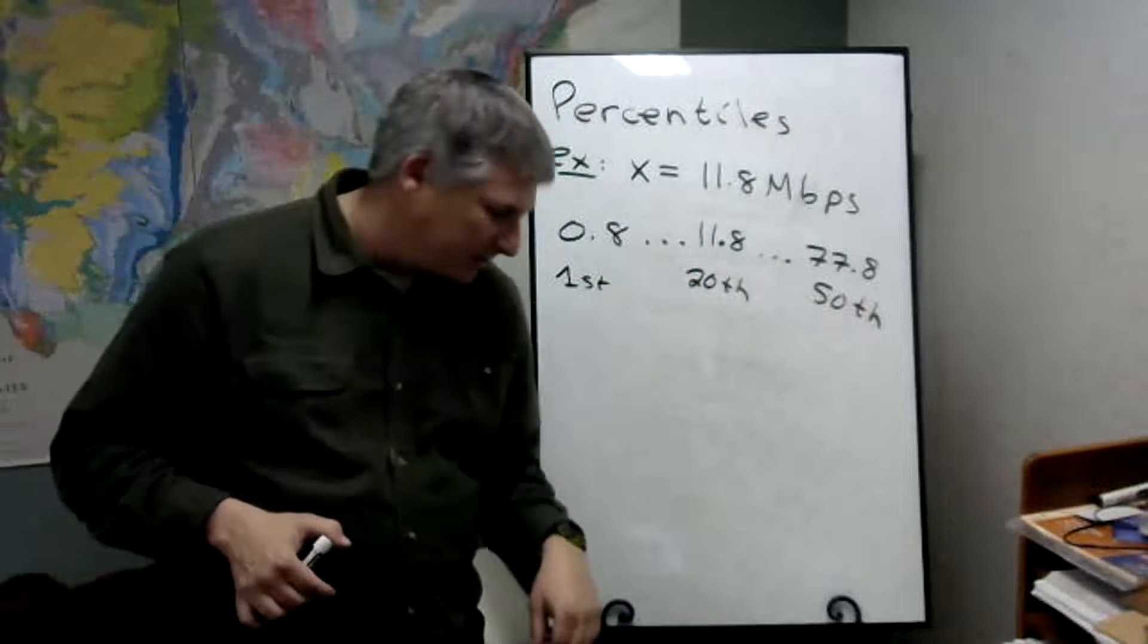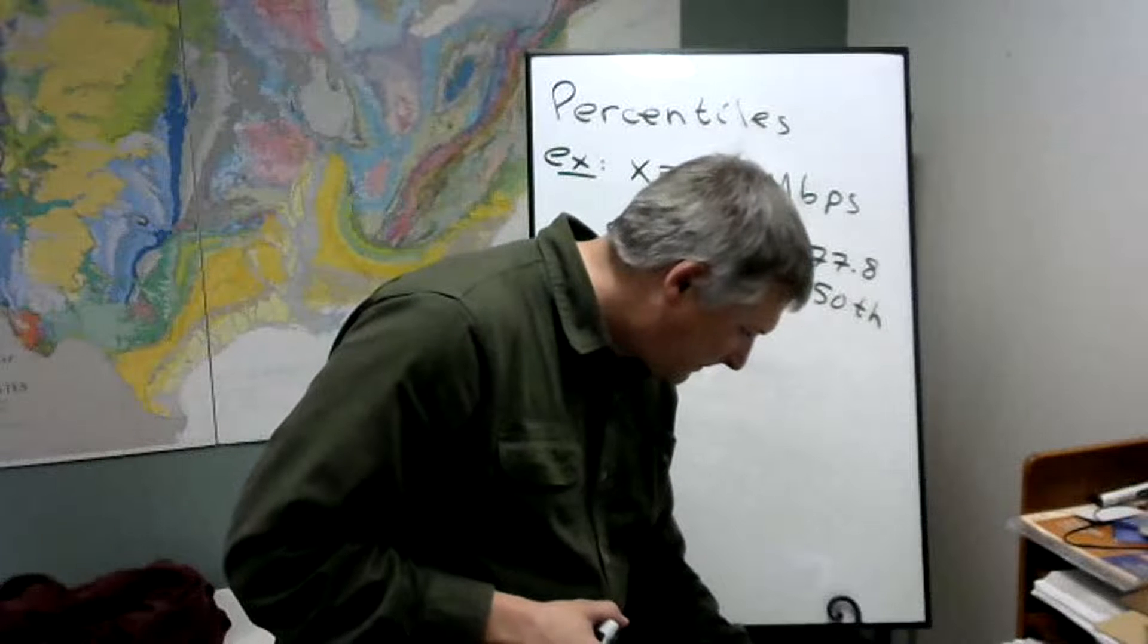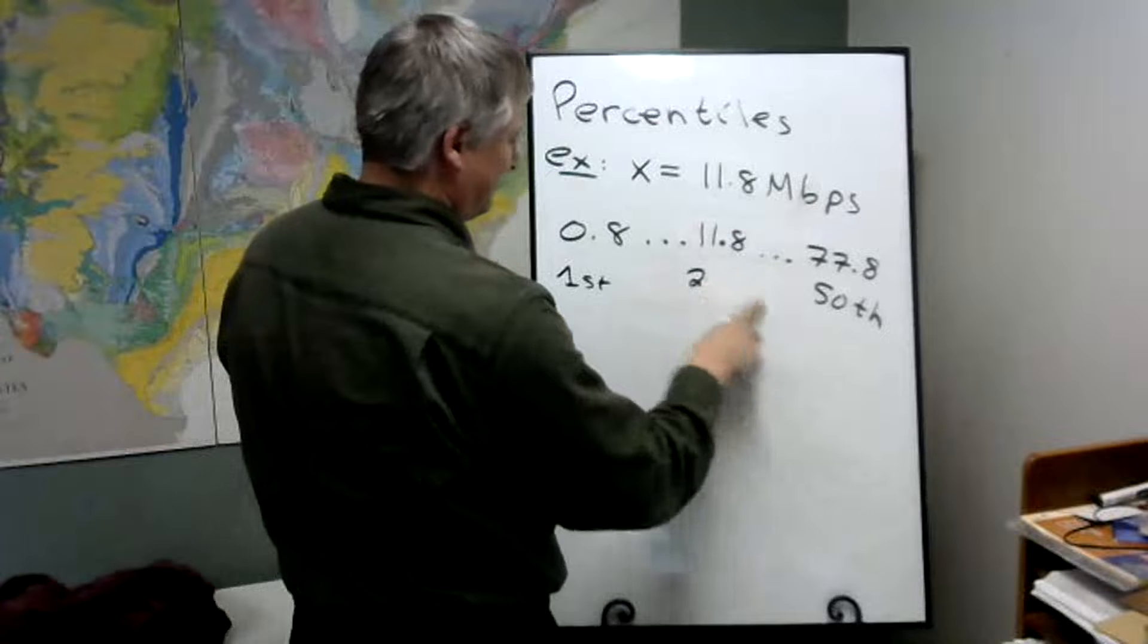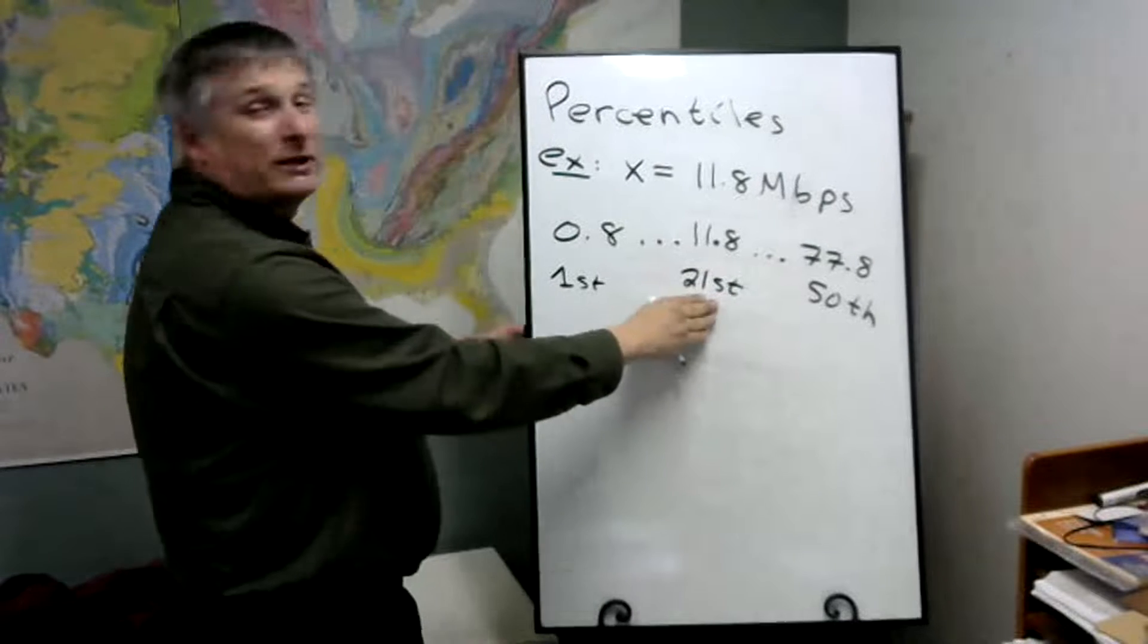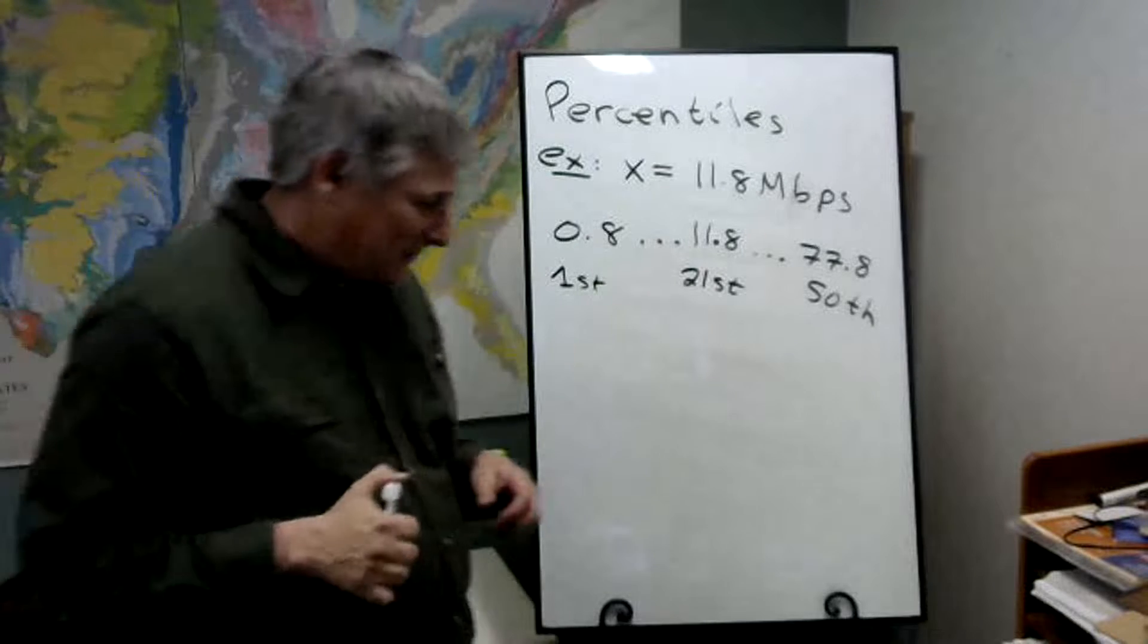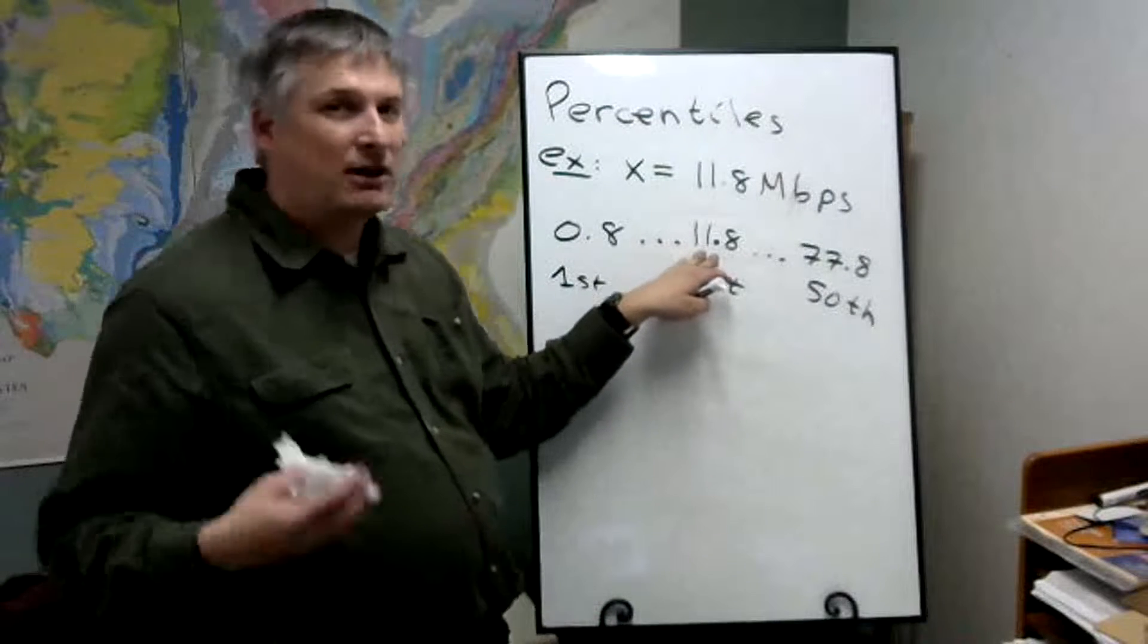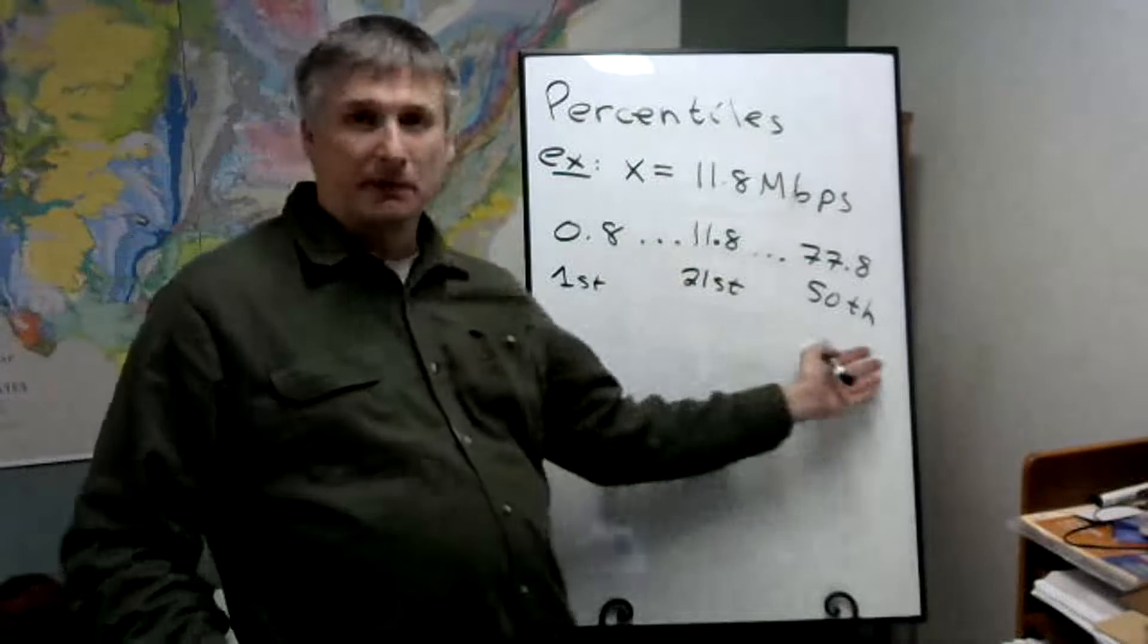So if you're following along in the chart, you can look for 11.8. It's going to be the 21st in the chart if you count the data. So what we want to do is we want to ask what percentile location is represented by this data value. Now again, we've put everything in order.